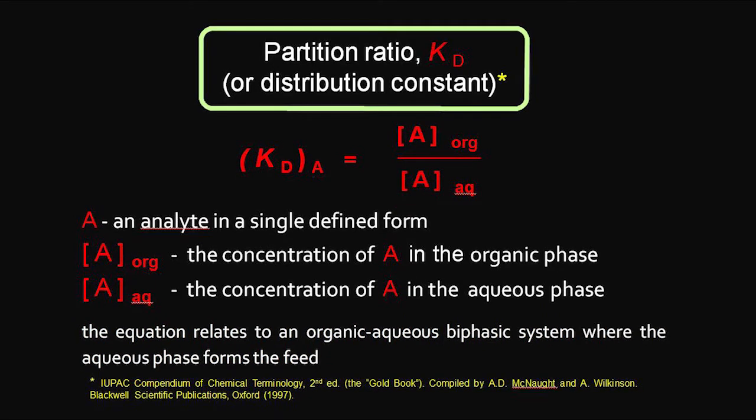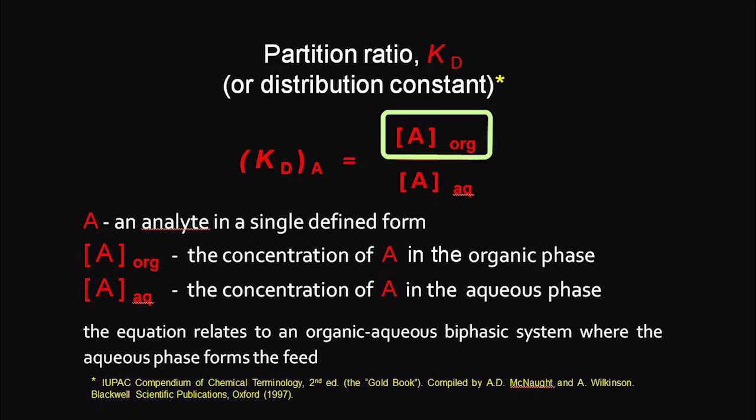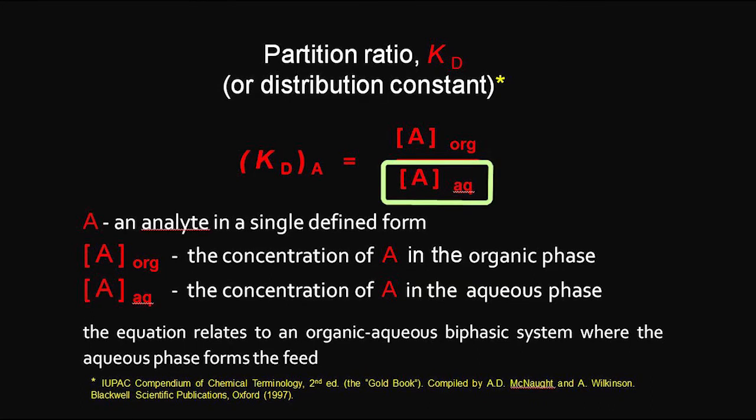The target analyte partitions between two liquid phases to establish equilibrium. The extraction efficiency depends on the partition ratio, also known as the distribution constant. The partition ratio is the ratio of the concentration of an analyte in a single defined form in an organic phase to its concentration in the same form in the aqueous phase at equilibrium.